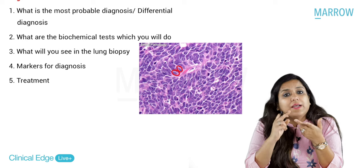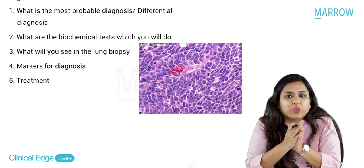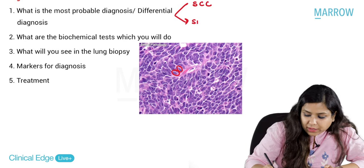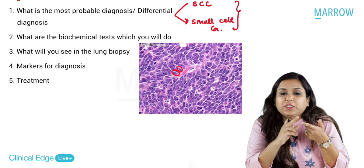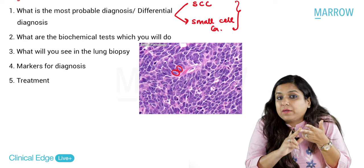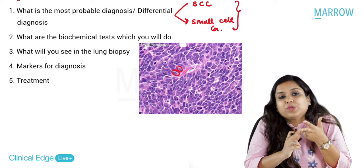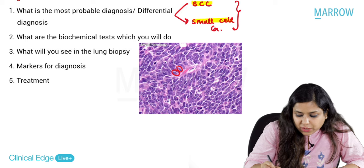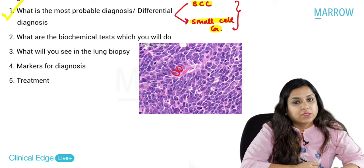If my patient is a smoker and elderly with weight loss, what is the more common lung cancer to think of? I will think of two: squamous cell carcinoma (SCC) and small cell lung cancer. Why not adenocarcinoma? Because adenocarcinoma is more common in women, mostly peripherally located, and usually seen in non-smokers. This patient is a smoker. So I have made two differential diagnoses: squamous cell cancer and small cell lung cancer.